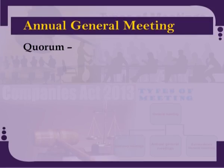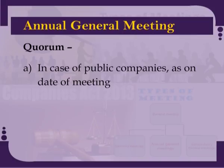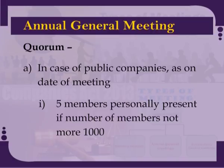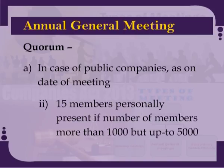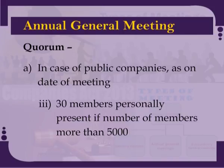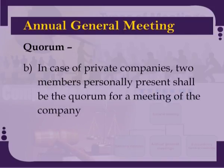In case of public companies, five members personally present if the number of members are not more than 1,000; 15 members personally present if the number of members are more than 1,000 but up to 5,000; and 30 members personally present if the number of members are more than 5,000. In case of private companies, two members personally present shall be the quorum for a meeting of the company.